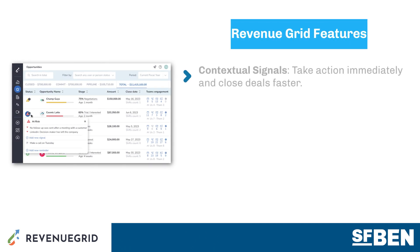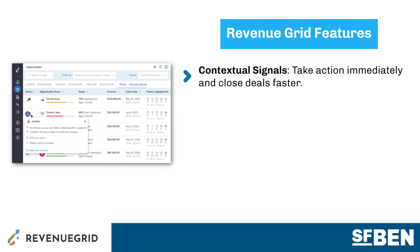Sales reps will never again forget to update the CRM with contextual signals. Signals are configurable and can be delivered wherever your sales team lives, whether that's email, Teams, or Slack. It also means that managers no longer have to chase sales reps to update Salesforce.